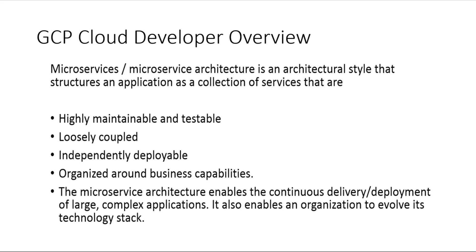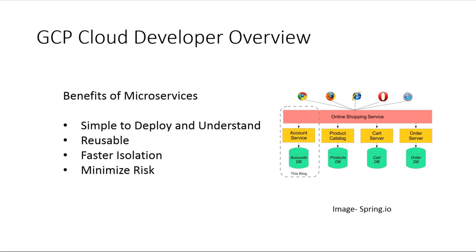We want to know what microservices are and realize there are real benefits: they're simple to deploy and understand in most cases, they're reusable, and provide faster isolation if there's an issue. In a legacy app, a query service was tied to both the user application and the database — everything coded as one application. Now, each individual service gets its own microservice. Instead of putting 20 different services into one large service, we break them into 20 mini services or microservices.